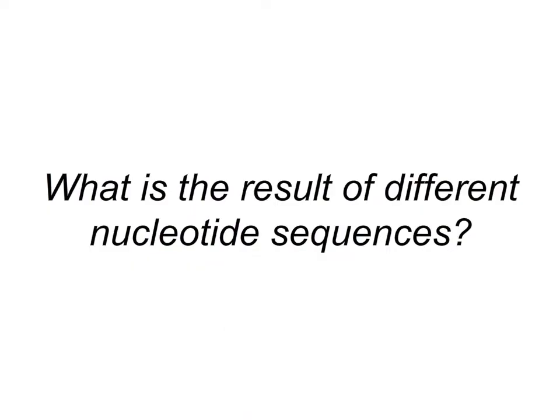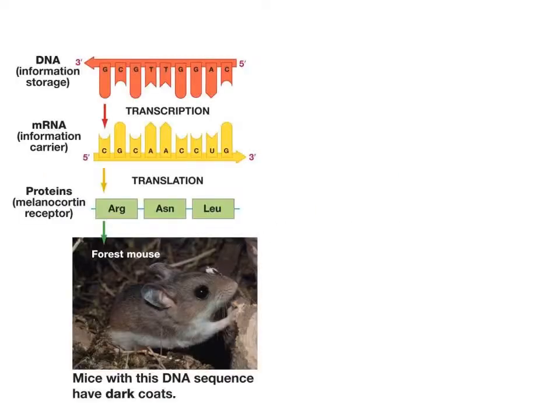Now let's answer the question: what happens when nucleotide sequences differ from each other? Take this mouse — she has a specific gene that codes for coat pigmentation, in other words, fur color. When this gene is transcribed and translated, a protein is produced that deposits enough pigment to result in a dark coat color.